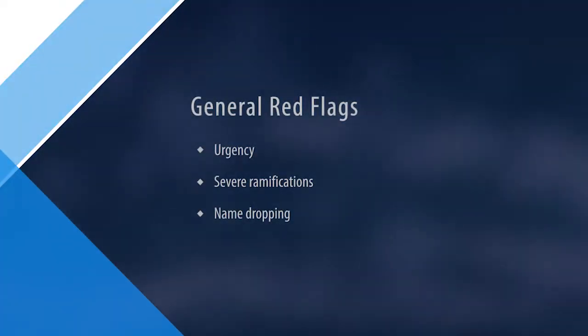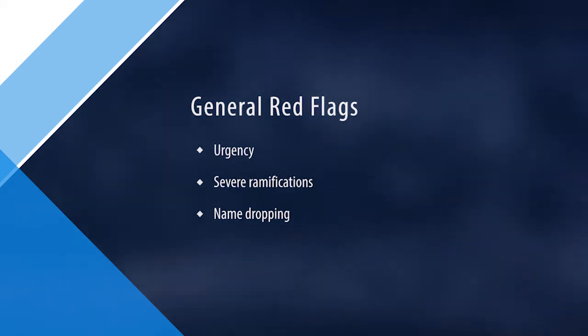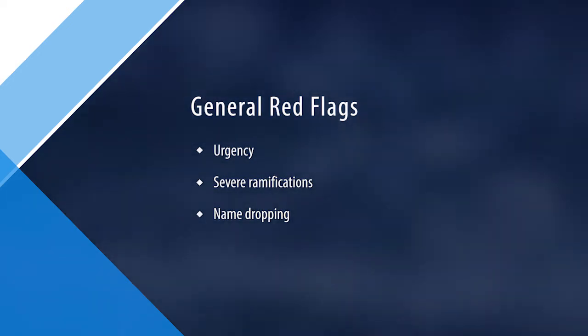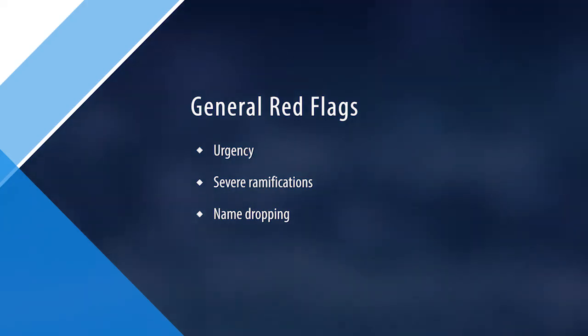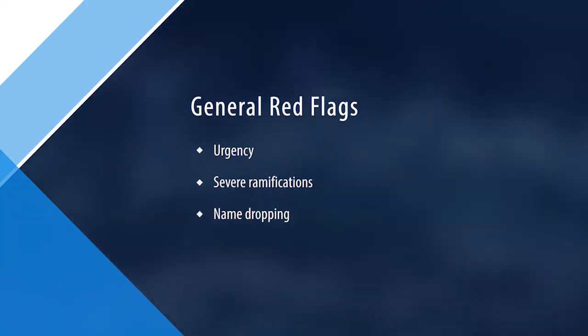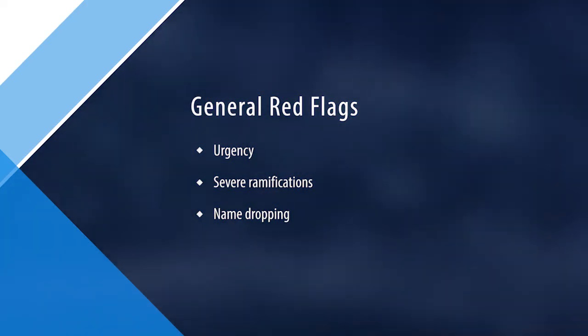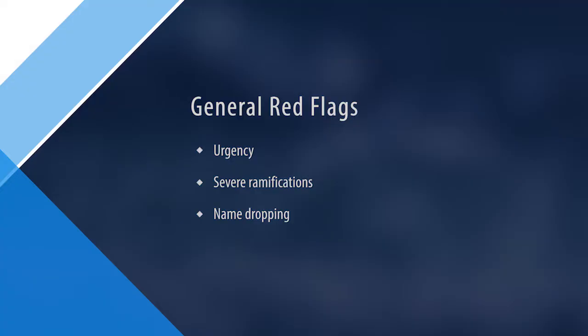With any type of social engineering method, there are some common attributes that draw suspicion: urgency, severe ramifications, and name-dropping. Specific attributes of phishing will be discussed next.